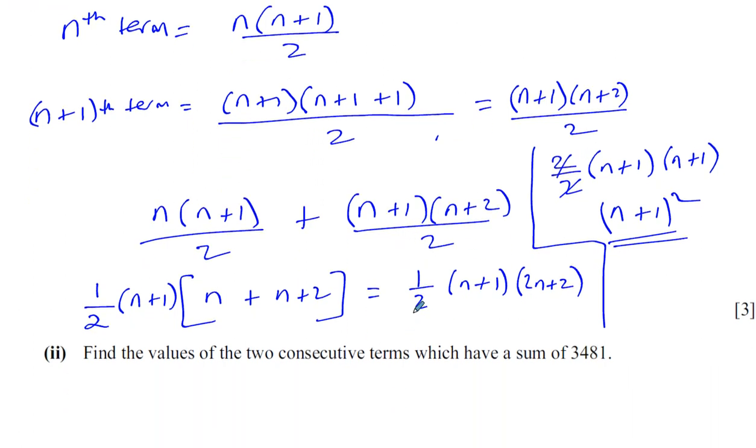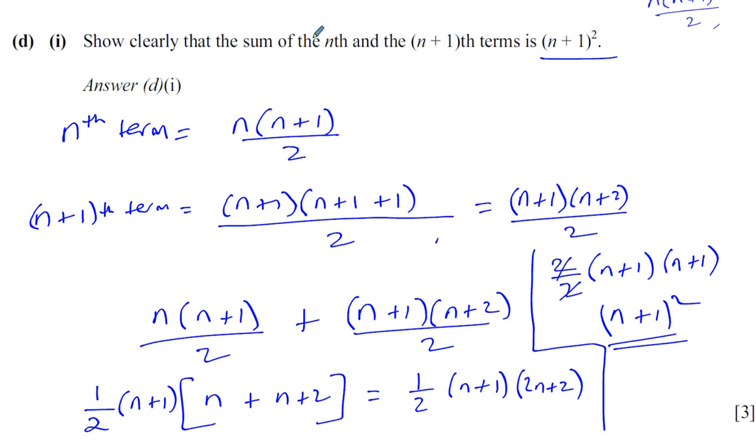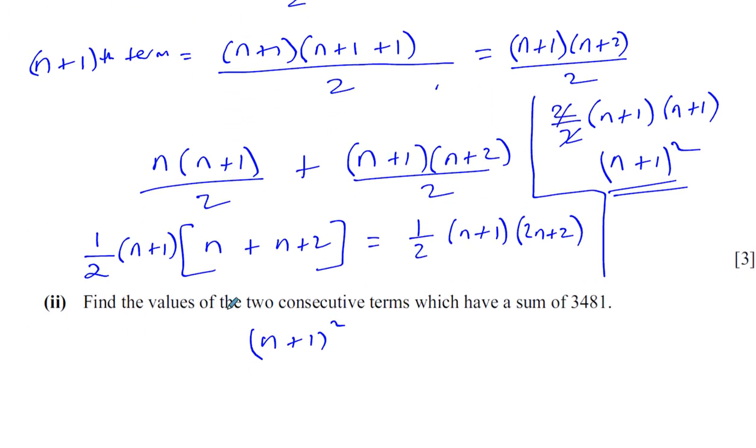It says, find the values of the 2 consecutive terms which have a sum of 3,481. We know basically that the sum of 2 consecutive terms is given by n+1 squared. Even if you couldn't prove it, they told you it. The sum of a term and the n+1 term, well, those are 2 consecutive terms. So, we want to find when n+1 squared is equal to 3,481. Because this expression, n+1 squared, tells us the sum of 2 consecutive terms. To solve this, you can take the square root of both sides.